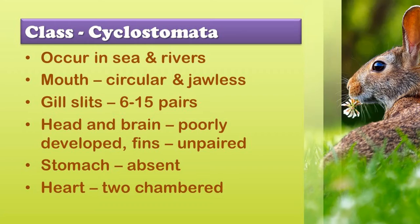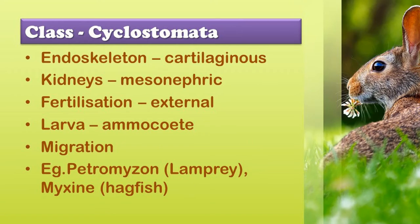Class Cyclostomata. All members of this class are primitive and poikilothermic — meaning they change their body temperature according to the environmental temperature. The body is slender and eel-like. The mouth is circular and jawless, which is a very important characteristic feature. They have gill slits from 6 to 15 pairs on both sides of the pharyngeal region. The head and brain are poorly developed, and fins are unpaired. Stomach is absent. Heart is two-chambered. Exoskeleton is made up of cartilage. Kidneys are mesonephric. Fertilization is external and development is indirect with a larval stage called ammocoete.